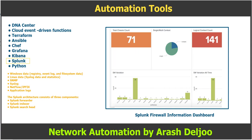The next automation tool is Splunk. Splunk is a distributed system that aggregates, parses, and analyzes data. Like Grafana, it focuses on monitoring, alerting, and data visualization. There are three different Splunk offerings: a free version, an enterprise version, and a software as a service cloud version.